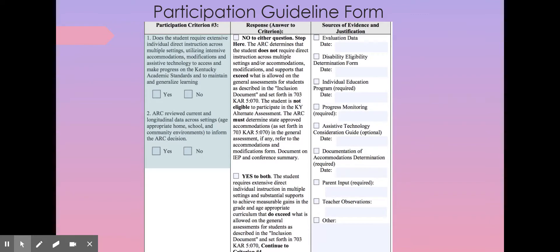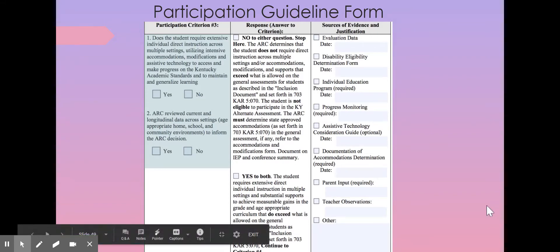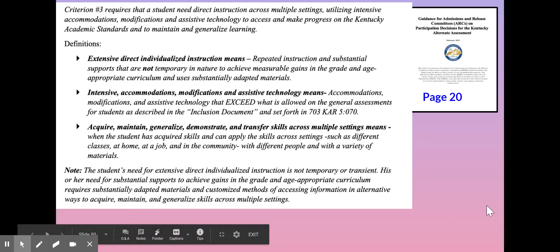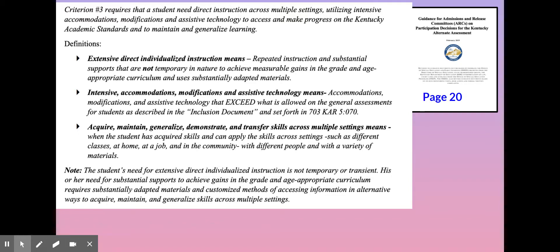Looking at the center column, remember: if you answer no to either of those questions, then you are stopping and not proceeding any further because the student is not going to be eligible to participate. But if you do answer yes to both, then you will continue on to criterion four. Let's unpack criterion three a little further.